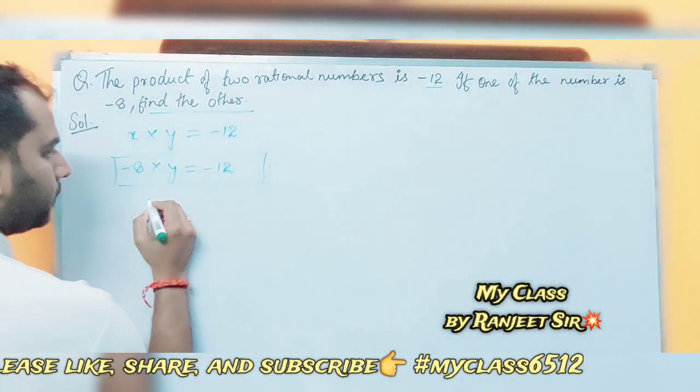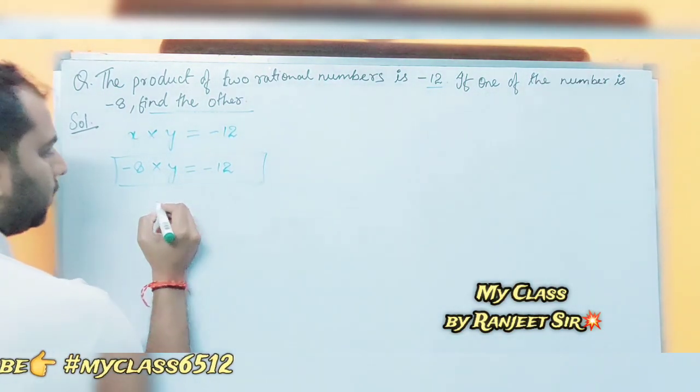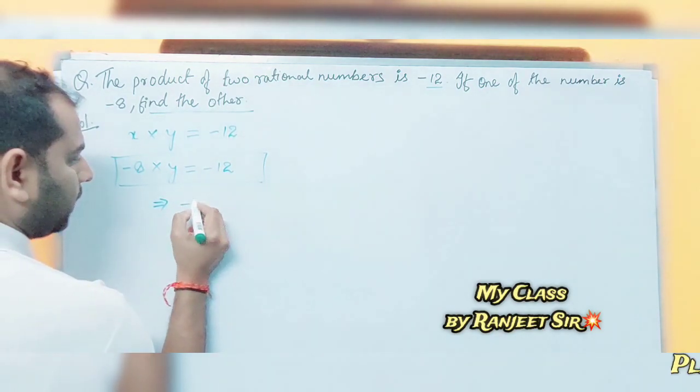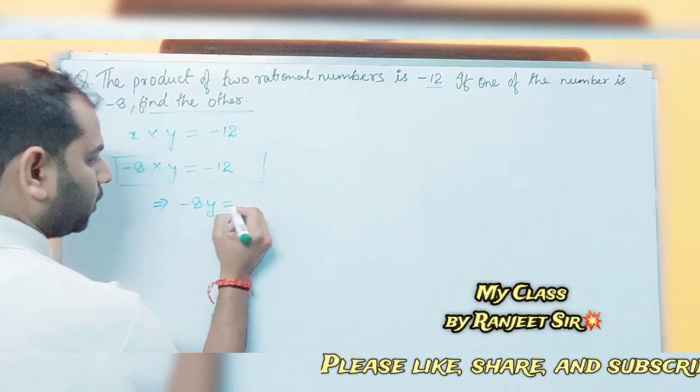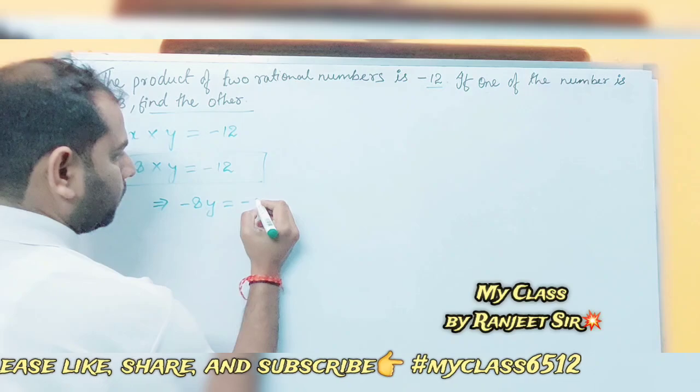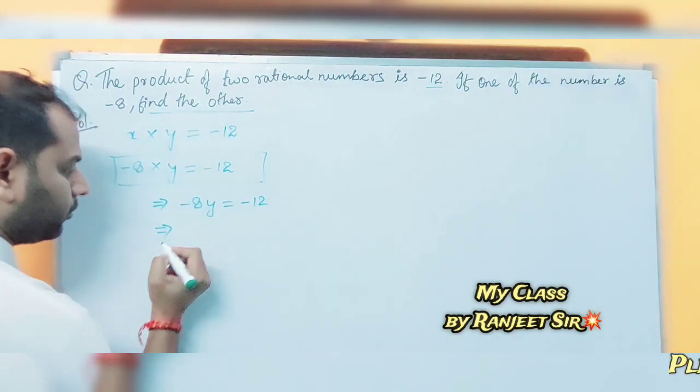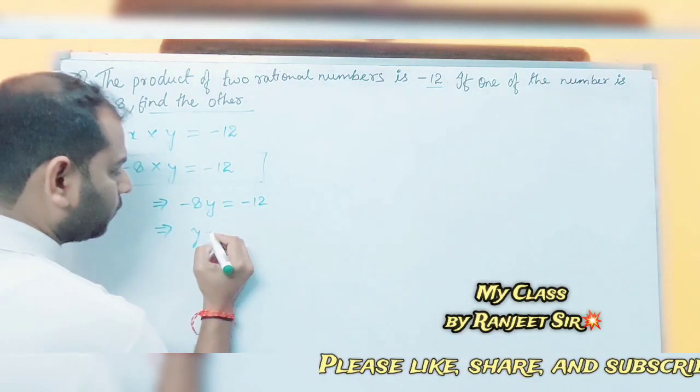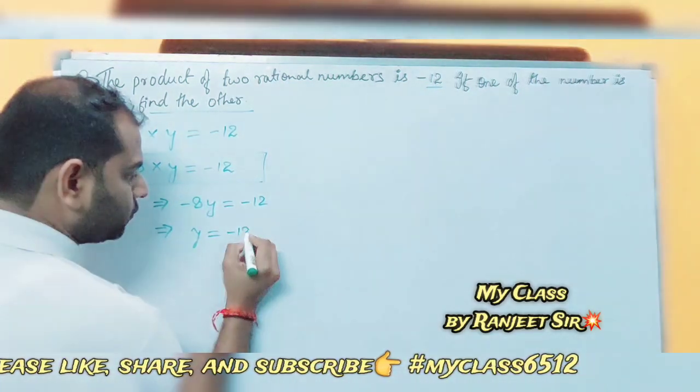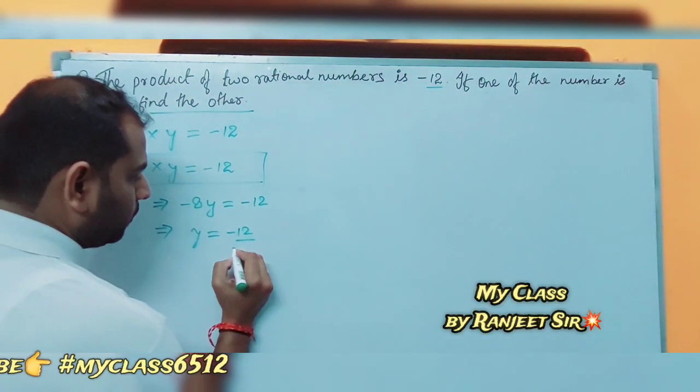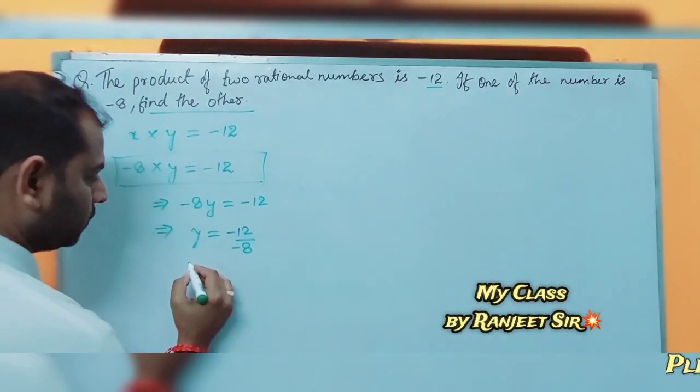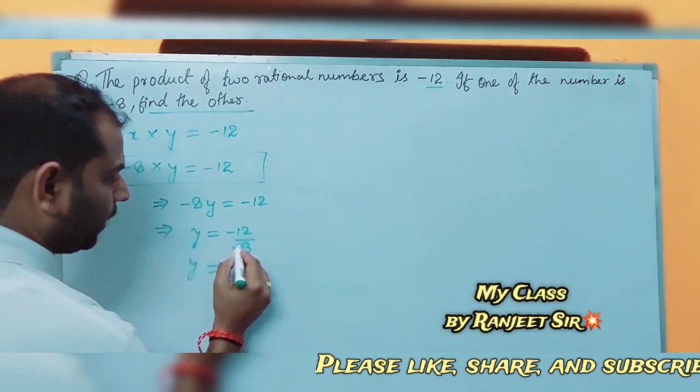Minus 8 times y equals minus 12. The next step is y equals minus 12 divided by minus 8. The minus signs cancel out.